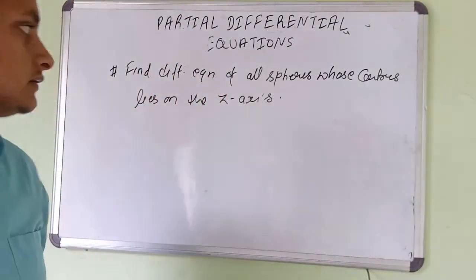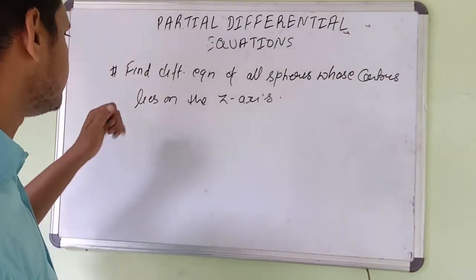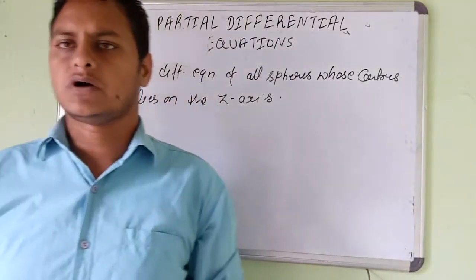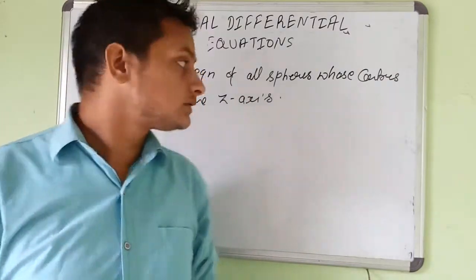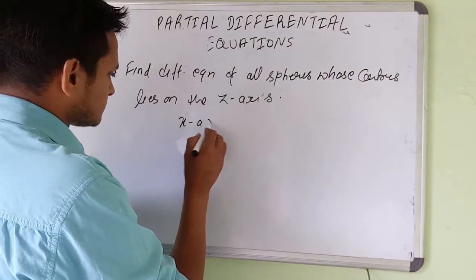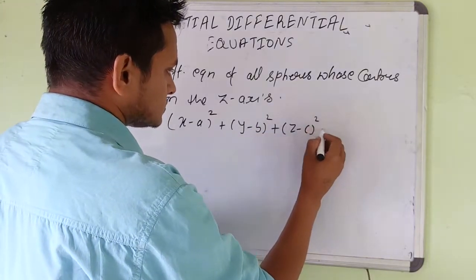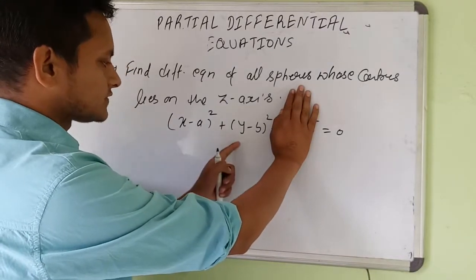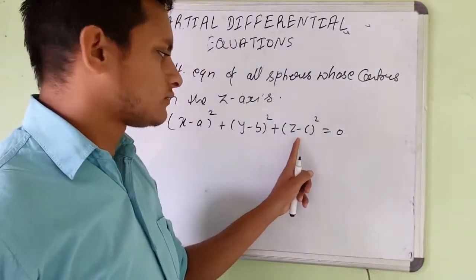In the previous video we did some simple problems. Now we take a different problem: find the differential equation of all spheres whose centers lie on the z-axis. We know that the equation of a sphere is (x-a)² + (y-b)² + (z-c)² = r².